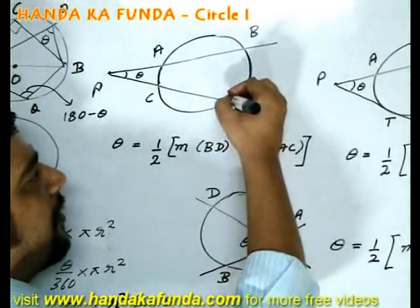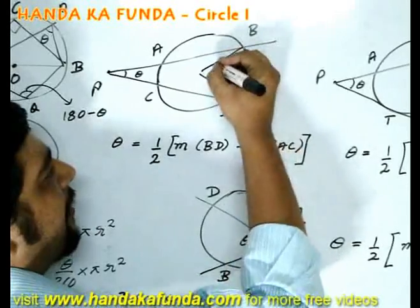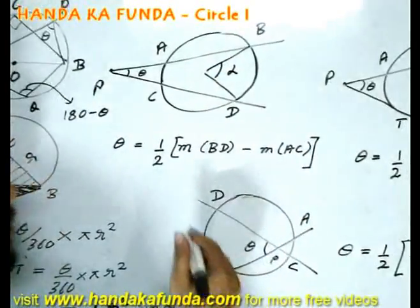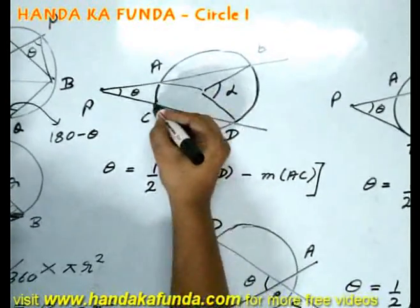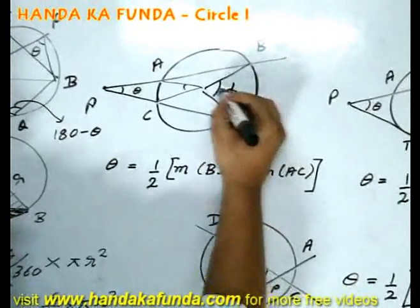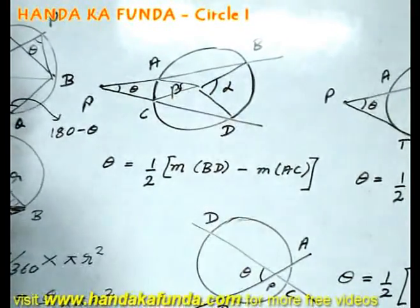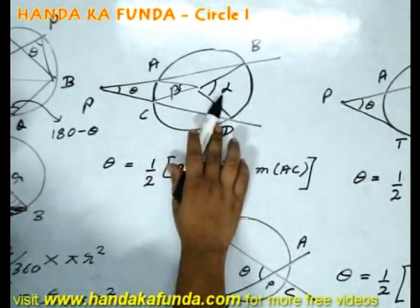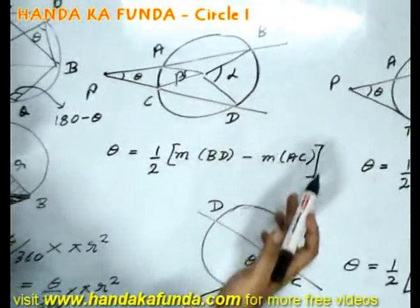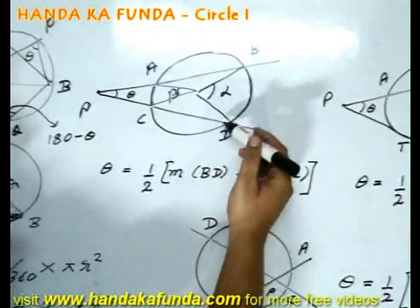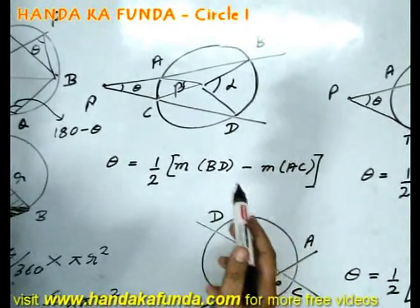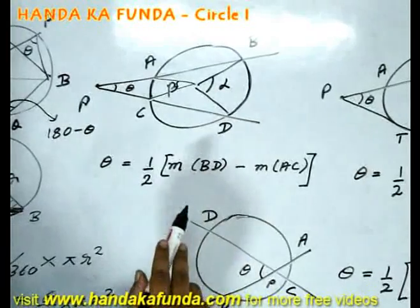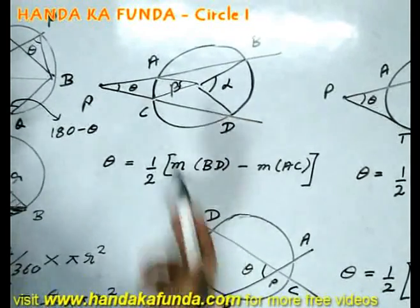So, if the arc BD subtends alpha at the center and this subtends beta at the center, then my answer for theta will be alpha minus beta by 2. Obviously, a bigger arc will subtend a bigger angle. Not only that, if two arcs are equal in length, then they subtend equal angles at the center.